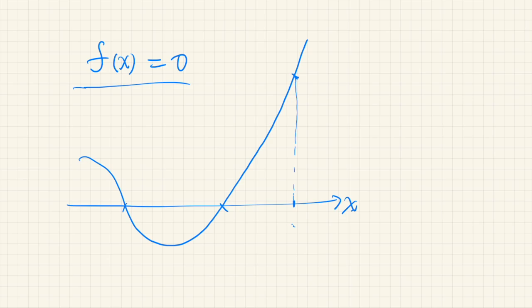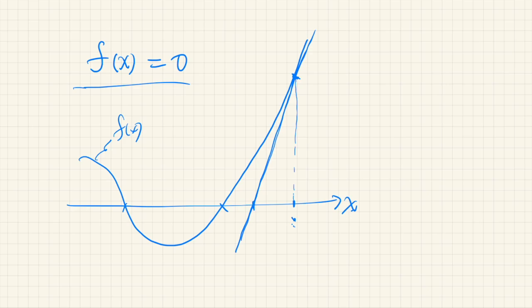At this point we draw the tangent line of this function. The x value is our initial guess, and we approximate f of x by its tangent line at this point. As an approximation we have this straight line, and where it crosses the x-axis becomes our next guess.